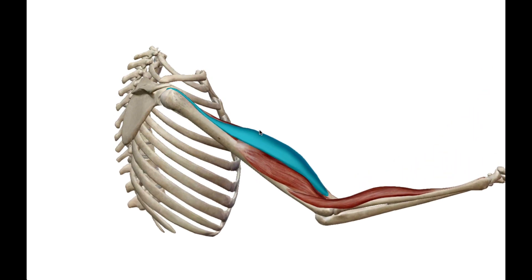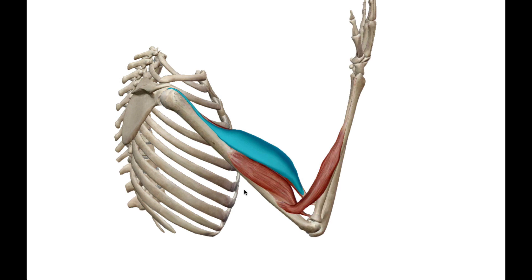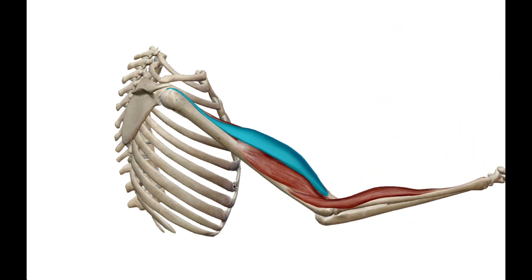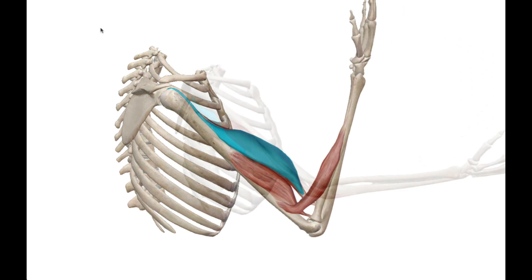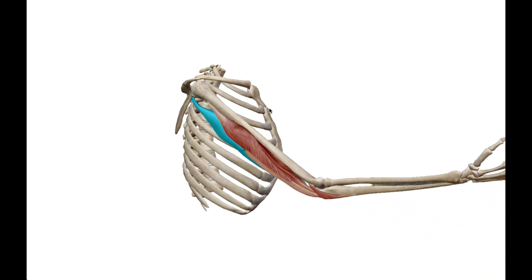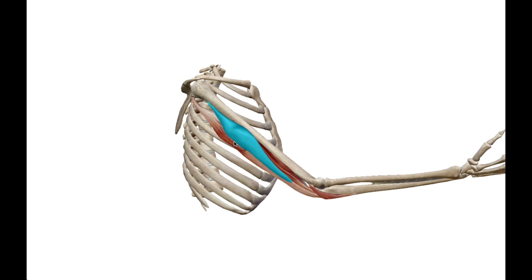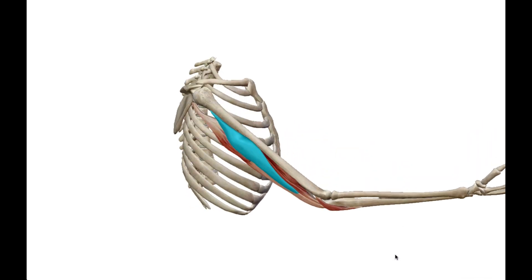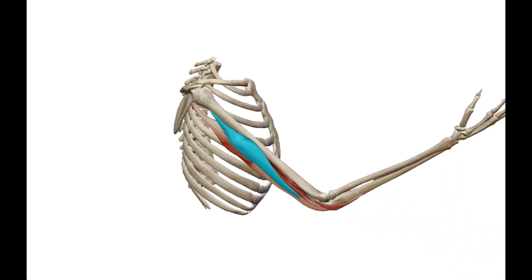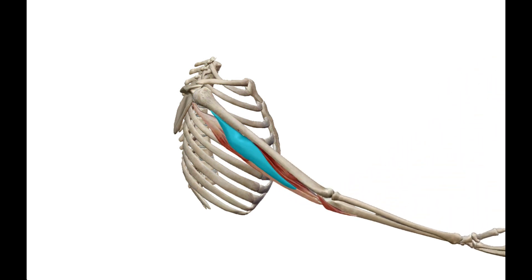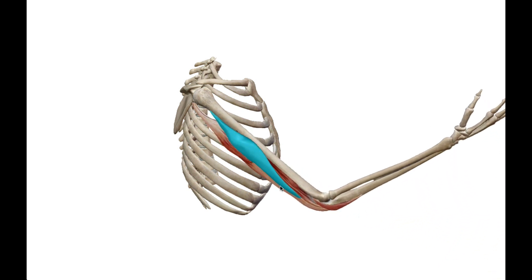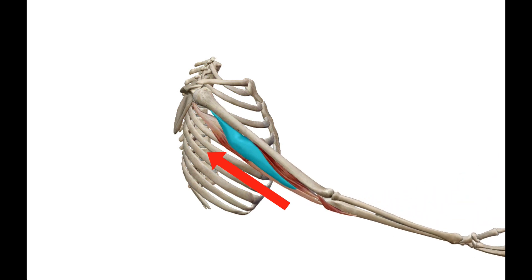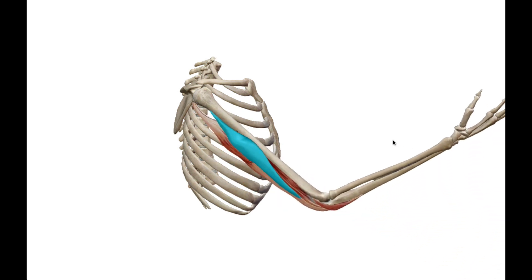Now let's look at the antagonist — the triceps. The triceps would be in a relaxed state during the biceps curl. When we look at the triceps as the antagonist, the biceps group is now relaxing and it's the triceps that are contracting as the force supplier. When the triceps bellies shorten, they pull down on the elbow causing the forearm to go down. Like pulling down on a rope, the weight — the resistance — would be going up, so the force and the resistance are both going up.